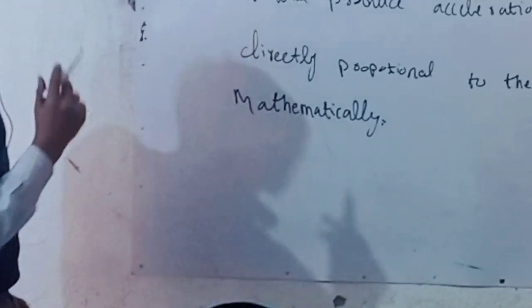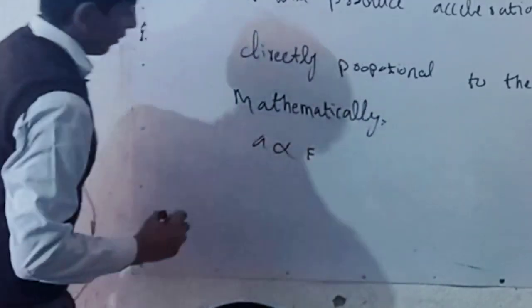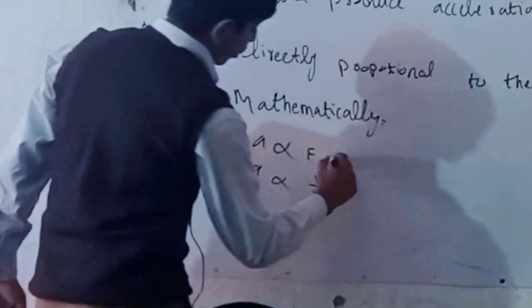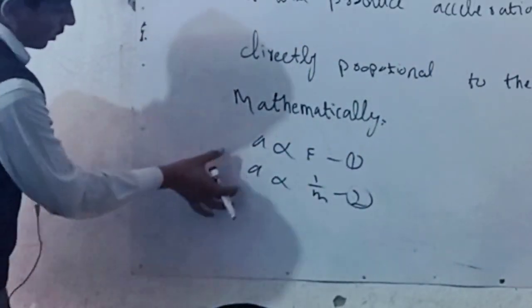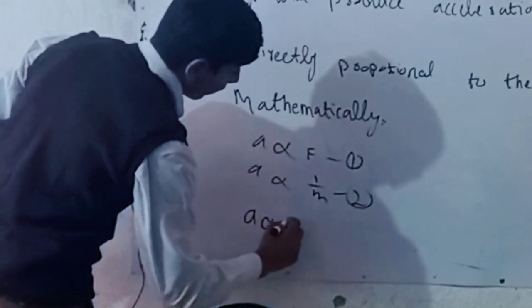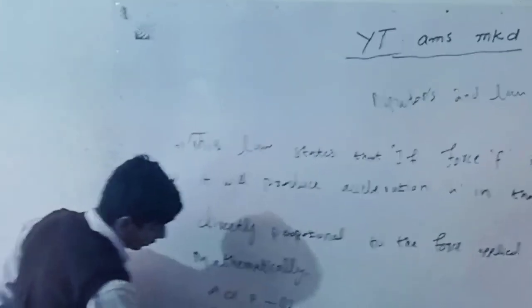We know that the acceleration is directly proportional to the force that we applied and inversely proportional to the mass of the object. So we will name this equation equation 1 and this equation equation 2. As these both equations are for acceleration, we can combine them both and write it like this: acceleration is directly proportional to force and